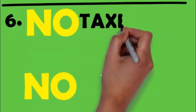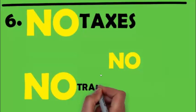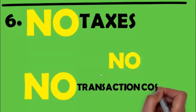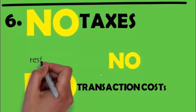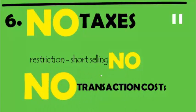Now comes the sixth assumption of CAPM. Only three are left. The sixth says no, no and no. What is this no? The no is no taxes, no transaction cost and there is no restriction on short selling. Now what is the meaning of short selling?